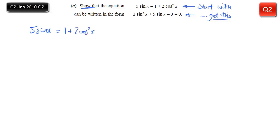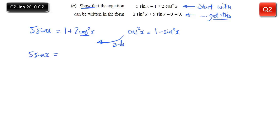5 sinx equals 1 plus 2 cos²x. We need to get rid of cos, because it isn't in the expression that we want. We know that cos²x can be written as 1 minus sin²x - we know this from sin²x plus cos²x equals 1. So that is simply substituted in there. Now, because it's a 'show that' question, we don't want to skip out any of the working here.